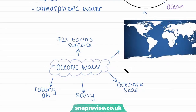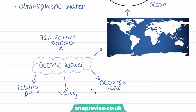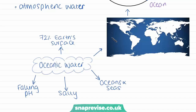The first store we're going to look at is oceanic water. The oceanic store is the largest store of water on Earth and accounts for 97% of the Earth's water in total. Oceans cover 72% of the Earth's surface, and we can see that in this map of the world here. The blue represents all the oceans and seas, and as you can see, it constitutes a very large proportion of the Earth's total surface.